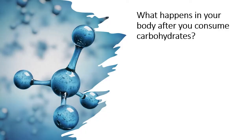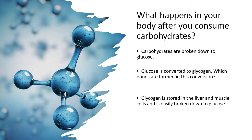When we go and consume our food — for example, when you wake up in the morning and have a big breakfast — the carbohydrates will be broken down to glucose in your body. Glucose is then converted to glycogen, and glycogen is stored in the liver and muscle cells where it can be easily broken down back to glucose.